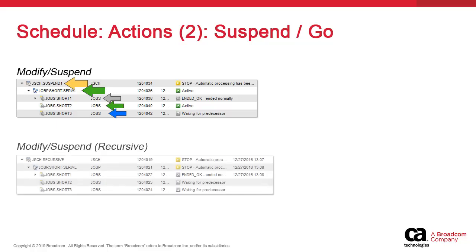A recursive suspend puts the schedule on hold as well as the workflow, even if it's active. Both the schedule and the workflow are on hold. Any active child task will be able to proceed because suspend never affects tasks in active states. However, because the workflow is suspended, all waiting-for-predecessor tasks will remain in a waiting state until you release the schedule, thereby releasing the workflow as well.